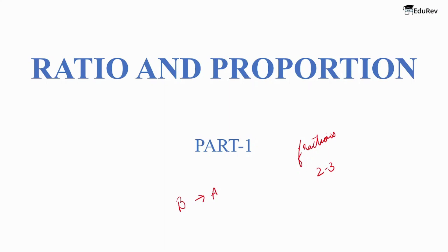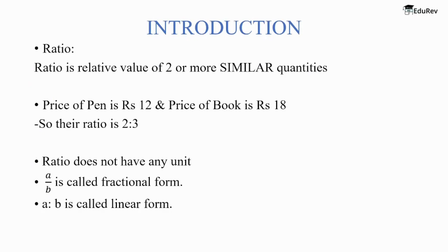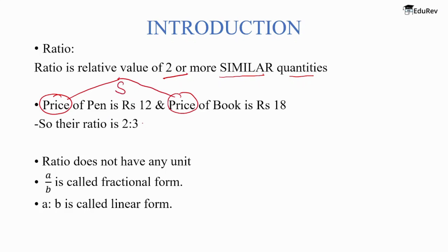In this lecture we will be talking about ratios only. What is a ratio? Ratio is the relative value of two or more similar quantities. Let us take an example. The price of a pen is Rs. 12 and the price of a book is Rs. 18. Here we are comparing price with price, so both are similar quantities. The price of pen and price of book are in the ratio 2 is to 3, because when we divide and reduce to simplest form, the ratio is equivalent to 2 is to 3.